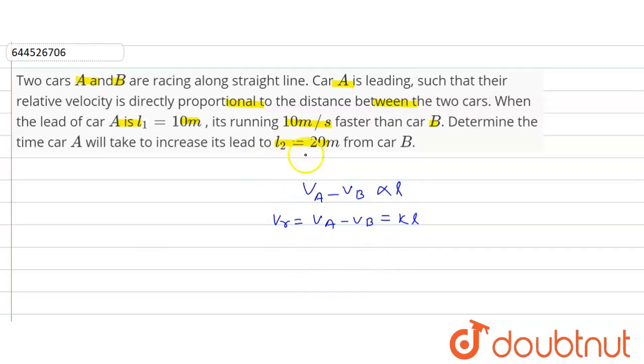Here relative velocity will be 10. So 10 equals K into L1. So 10 equals K into L1 value is 10. So K is equal to 1.